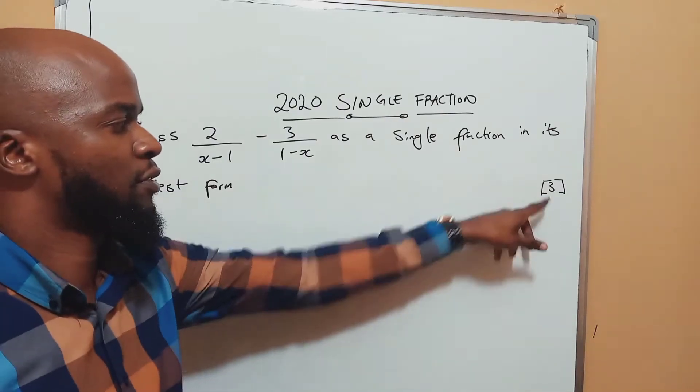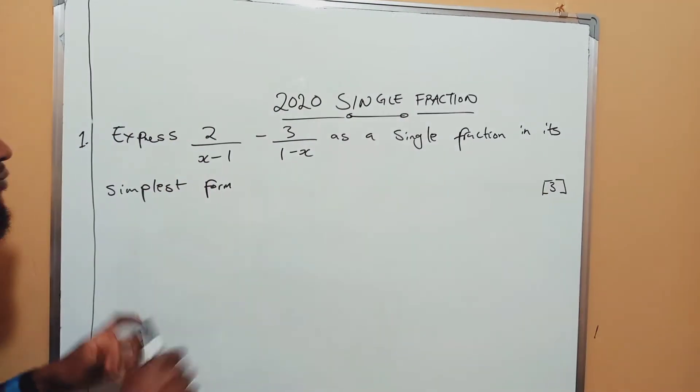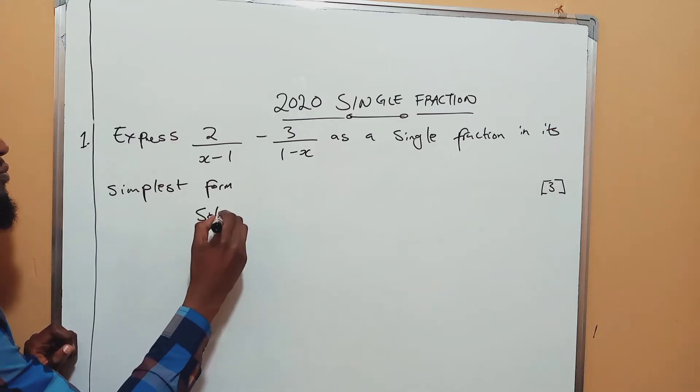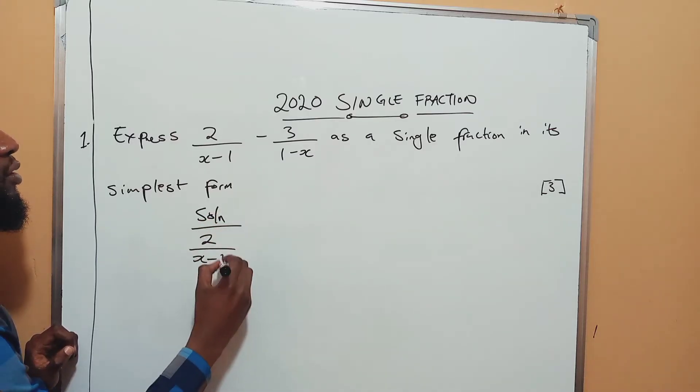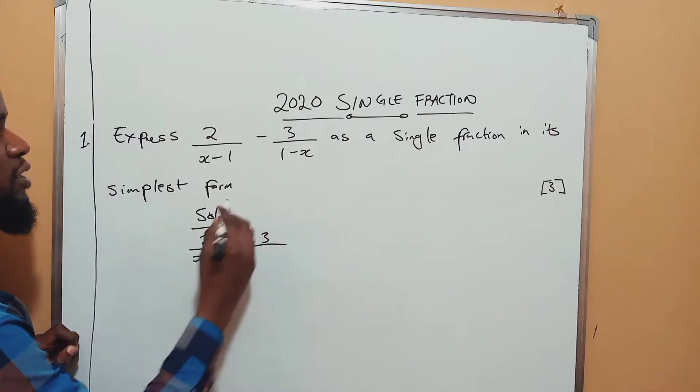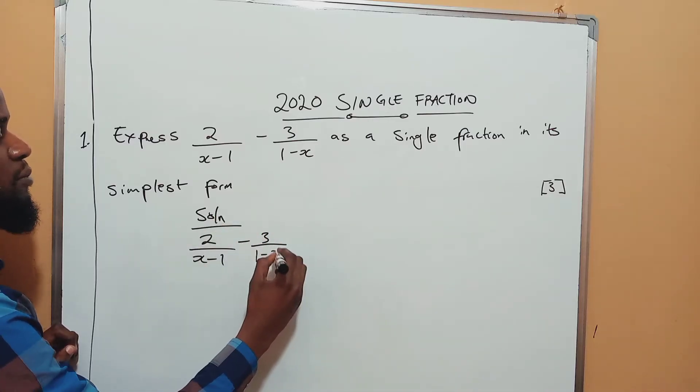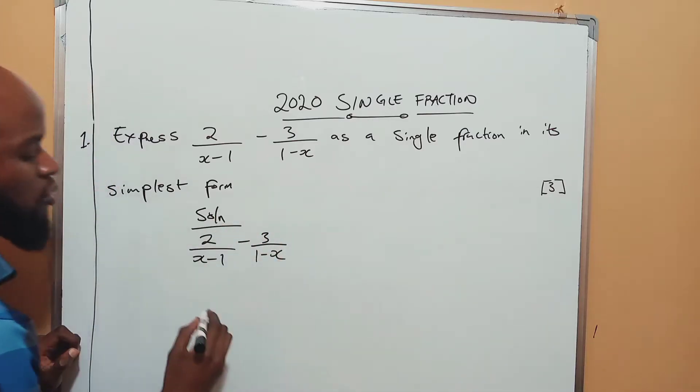And how many marks is it? Three. So solution - I'll write my original equation. These are two fractions, I want them to be one, so you're going to find what's common.